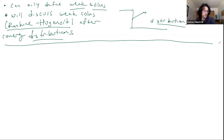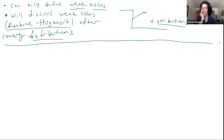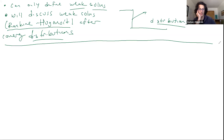I want to move now into the next part of the course. We've talked quite a bit about the method of characteristics and how to apply it. We've talked about linear transport. So we really covered a pretty broad gamut of first-order methods for PDE. But really the focus of this course is going to be on second-order PDE.